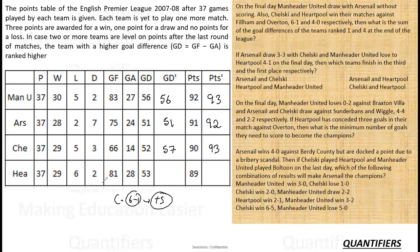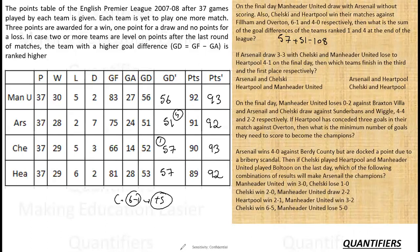Hartpool win 4-0 against Overton, so their goal difference is also 57 and their points are 92. So what is the sum of goal differences of the team ranked 1st and 4th? The team ranked 1st has 93 points, goal difference 57. The team ranked 4th has goal difference 51. So the sum is 57 + 51 = 108. If you write out every goal-for and goal-against calculation separately, it takes much longer — one student took 45 minutes. The answer to the first question is 108.